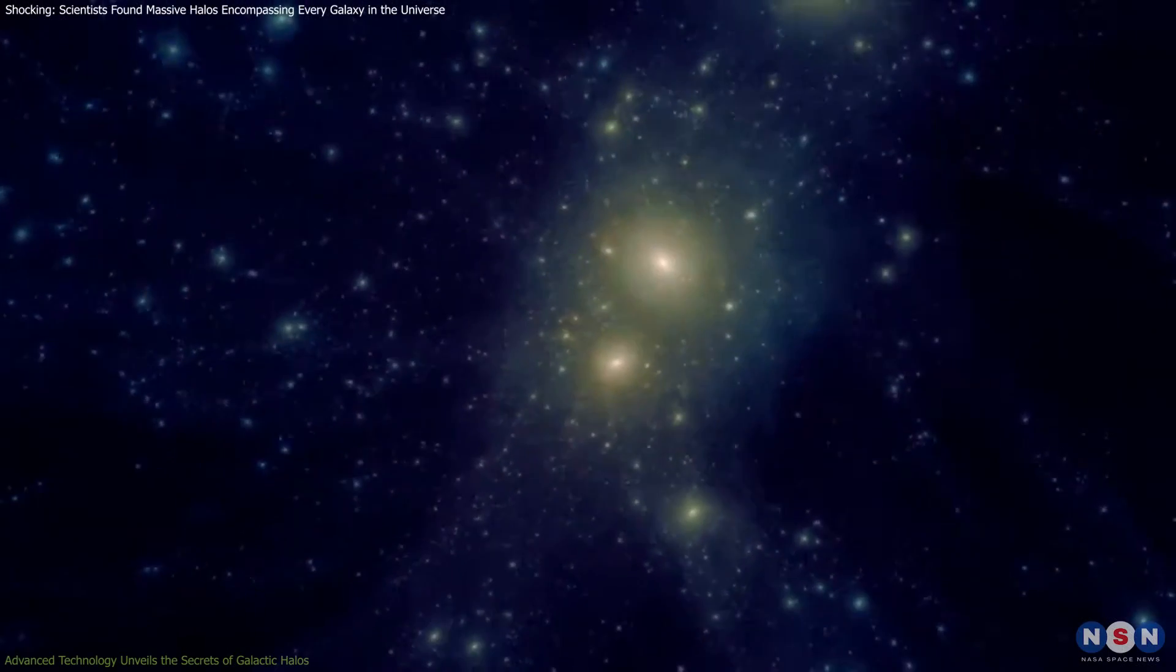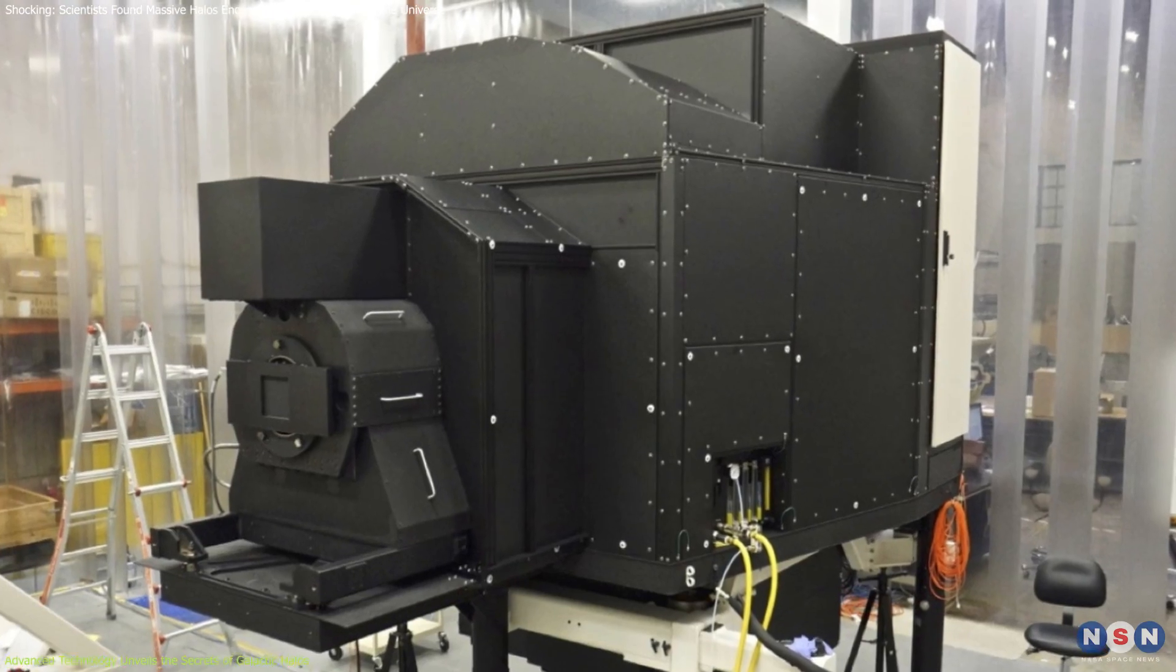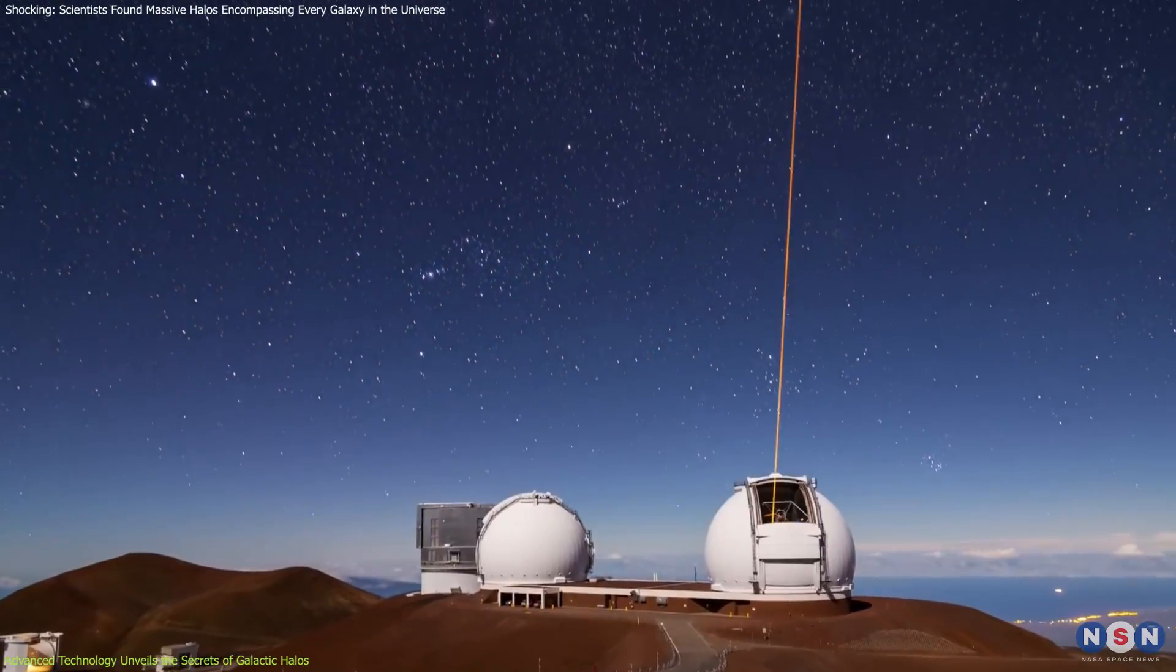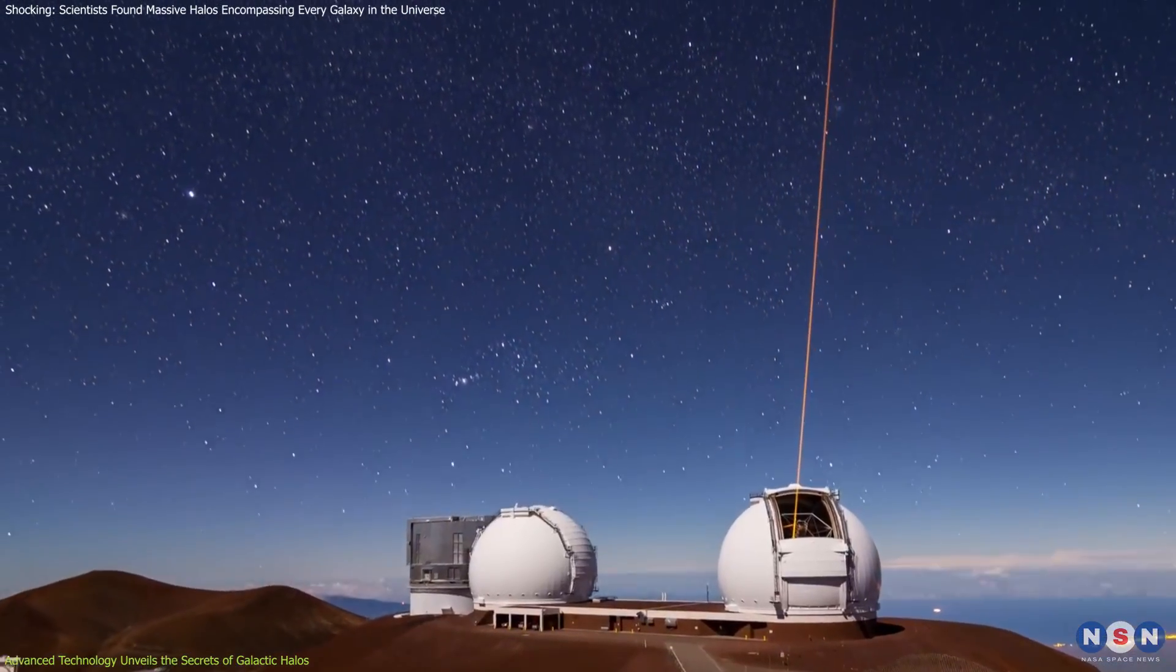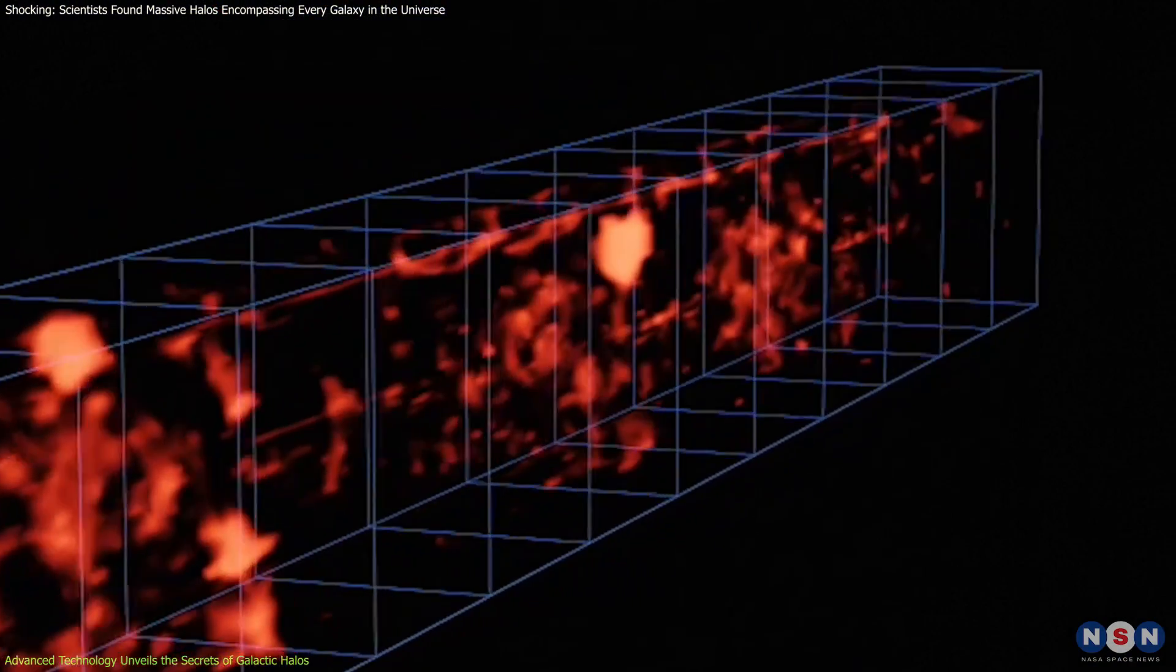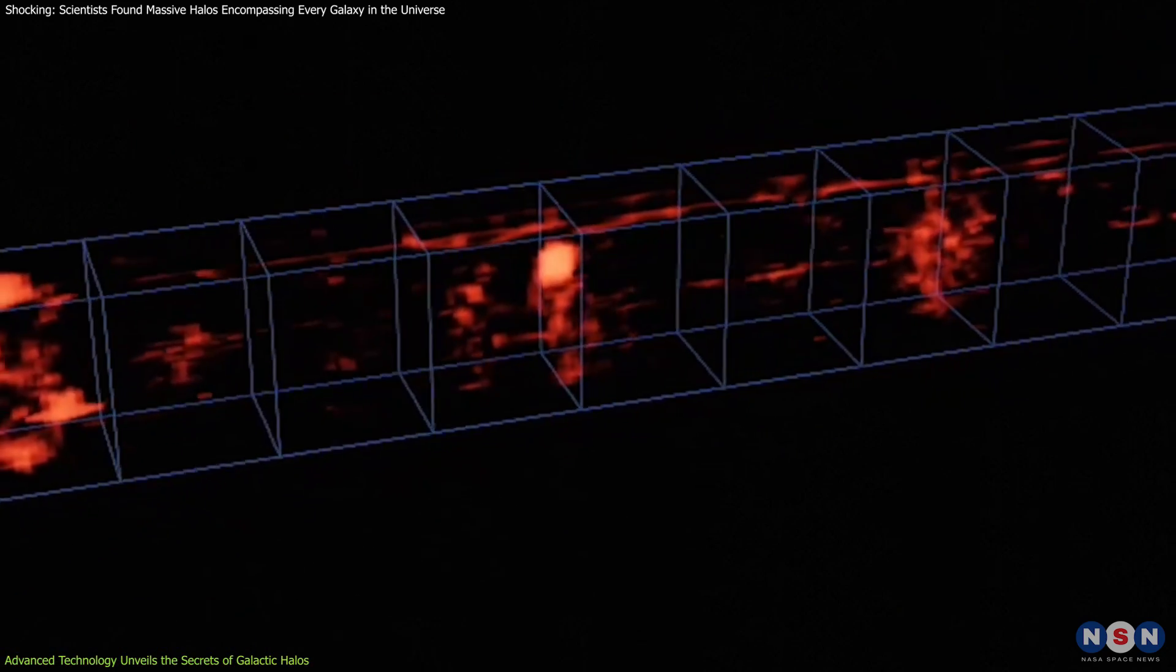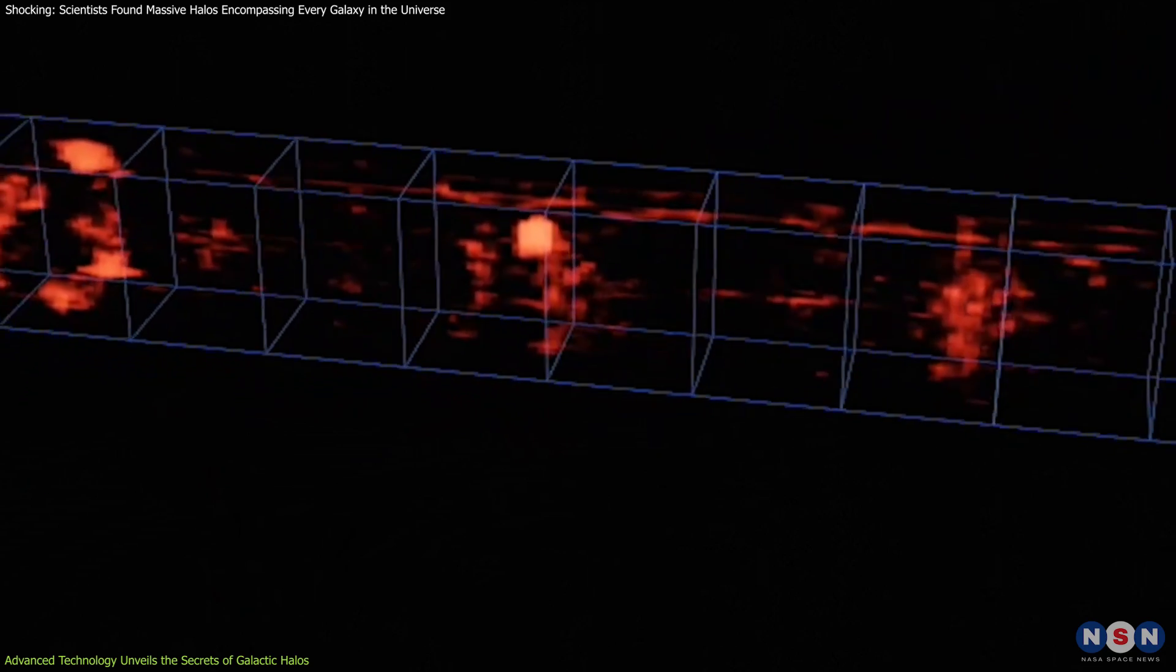The discovery of these enormous halos was made possible by the Keck Cosmic Web Imager. This sophisticated instrument uses a new type of spectrograph called an image slicer, which allows astronomers to capture spectroscopic images of extremely faint regions of the night sky, something beyond the reach of previous technology.